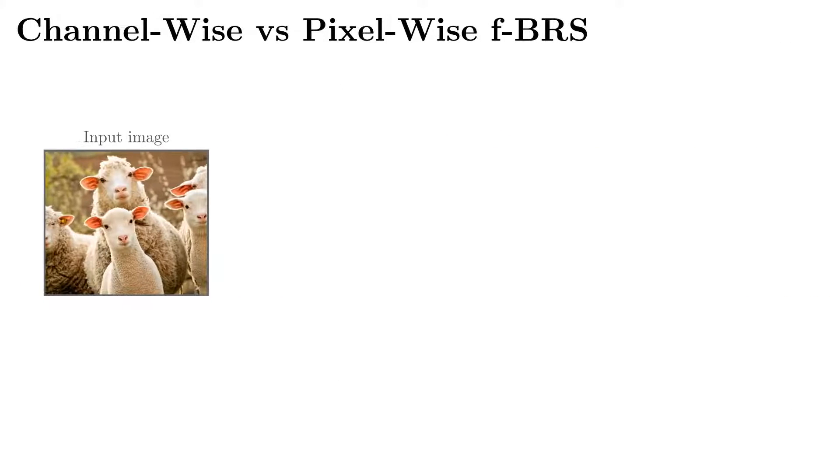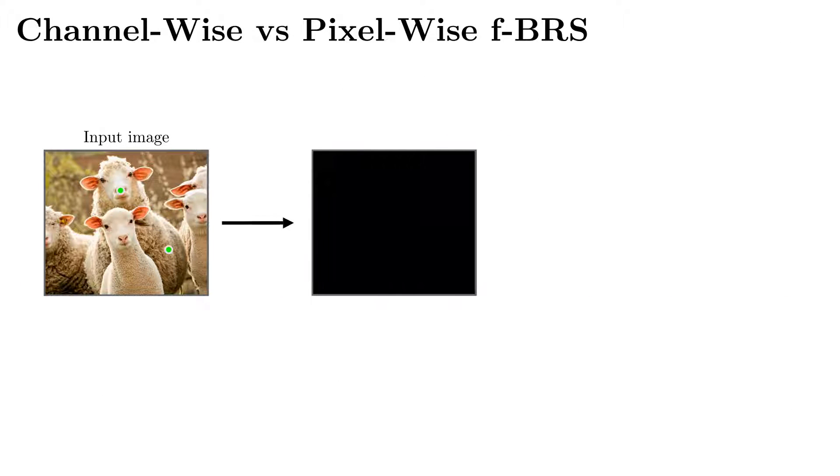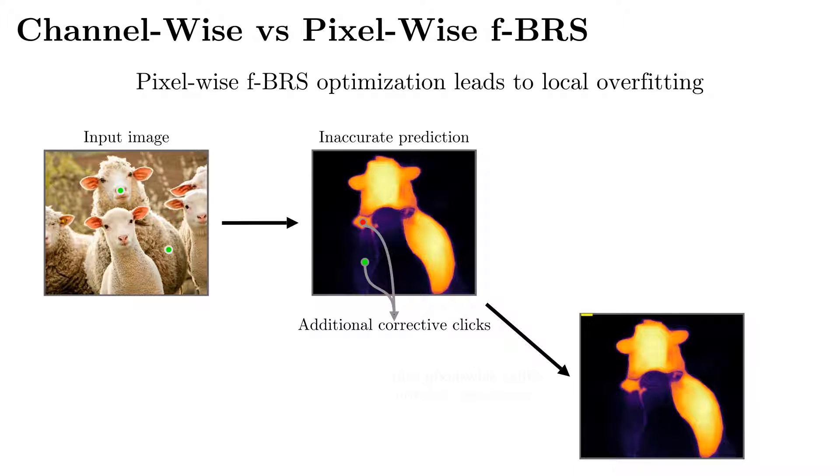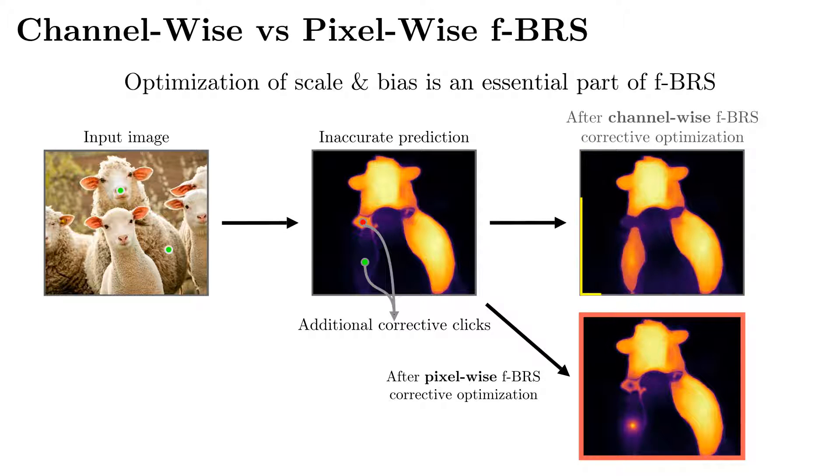There are two ways to modify the intermediate layer outputs of the network – pixel-wise and channel-wise. In pixel-wise approach, we optimize every value of a feature map independently. However, it results in local overfitting. Channel-wise approach is robust to local overfitting, as modifications of intermediate layer outputs apply along spatial dimensions.